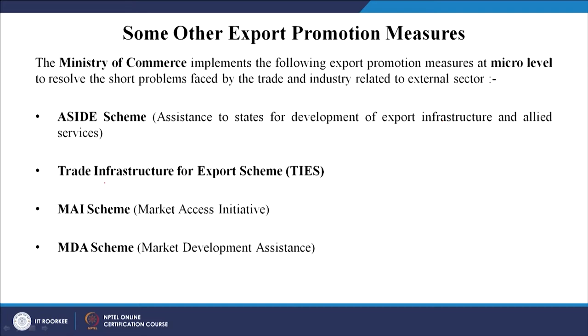Along with this there were a few more measures. For example, the ASIDE scheme — the government started to assist the development of export infrastructure and allied services among the states. Then the TIES, which is called the Trade Infrastructure for Export Scheme. Then there was the Market Access Initiative, which is the MAI scheme, which helps in development of foreign markets and promoting exporters' brands. Then there is the Market Development Assistance scheme, which is called the MDA scheme. These are the different schemes provided by the government of India in collaboration with the central and state governments, in different funding ratios.